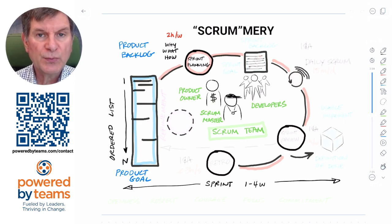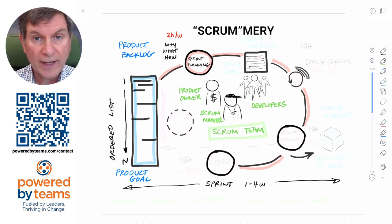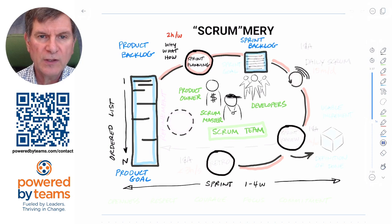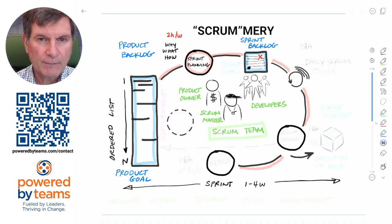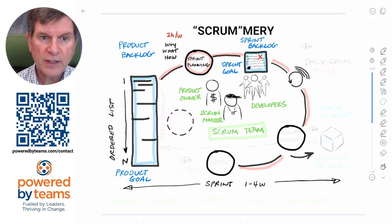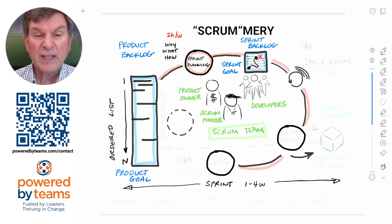The product owner should come into sprint planning with a set of selected product backlog items that are candidates for the sprint — that's the what element — and a why: something that helps them hang together. During sprint planning, items are pulled with the developers into the second artifact, the sprint backlog. The sprint goal drives cohesion and focus for all the work during the sprint, and by the end of sprint planning the team should agree on it. The how element is the developers taking those product backlog items and figuring out how to turn them into valuable increments by the end of the sprint.